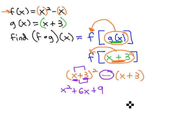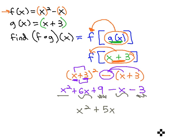On the second half, we have to distribute this negative through. So we have negative x minus 3, and now we can go through and combine like terms. There's an x squared. 6x minus x is plus 5x, and 9 minus 3 is plus 6.